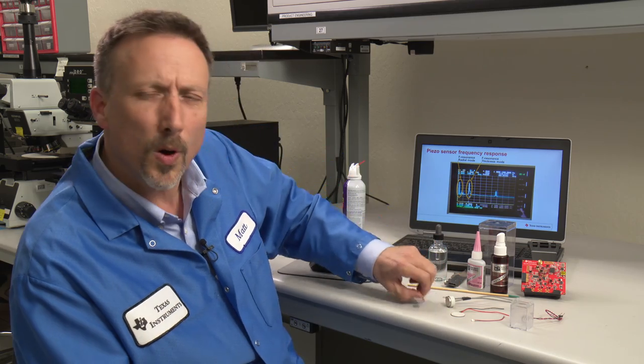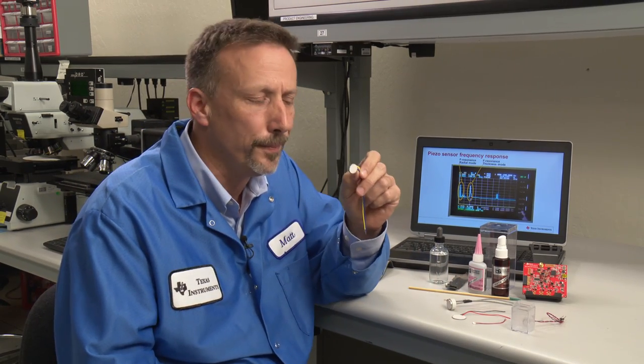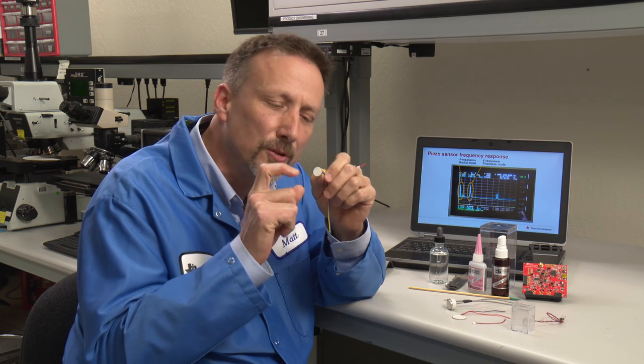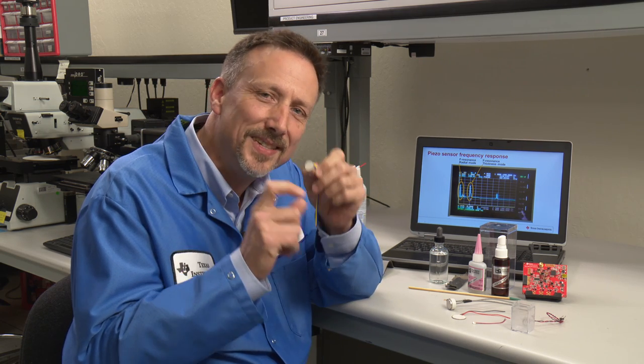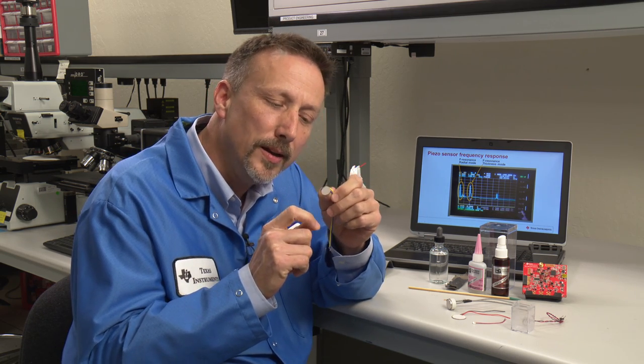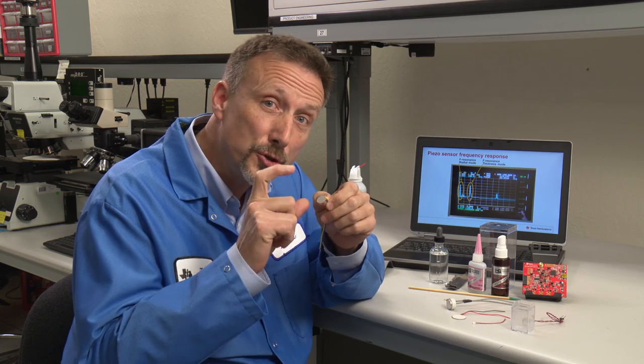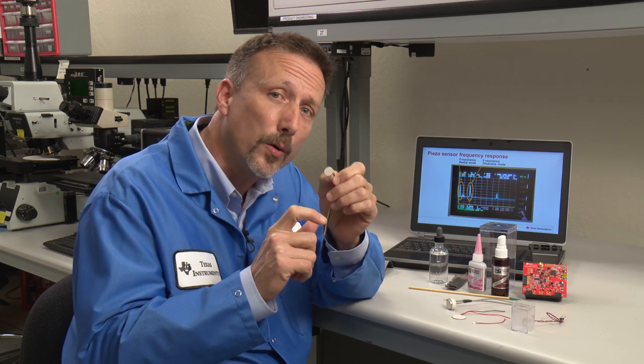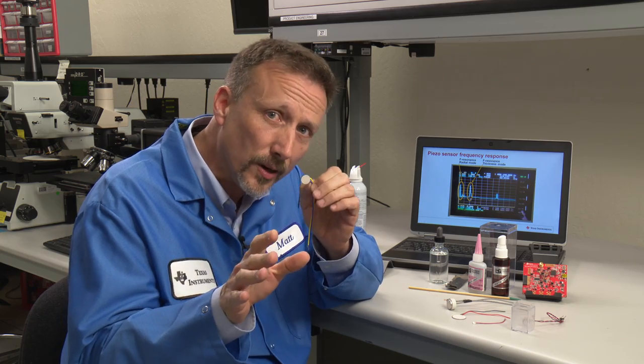Why would one transducer work better than another? The radius of the transducer is equivalent to its sensitivity and its power. In a nutshell, the larger the transducer, the more power it can send into your material, and the more sensitive it is to those echoes.